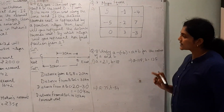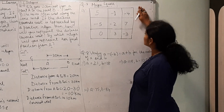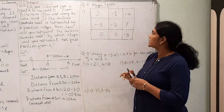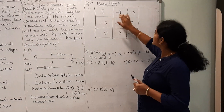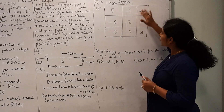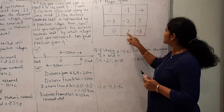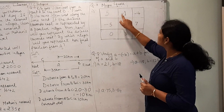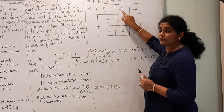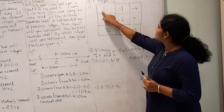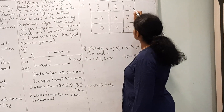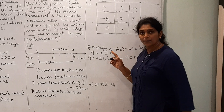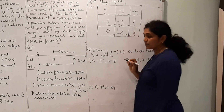Question 7 is a magic square. In this magic square you have to find the sum row-wise, column-wise, and diagonally. If all these sums are equal, then it is a magic square. Let us go horizontally first. The first row sum: 5 plus (-1) plus (-4). Open the bracket: 5 minus 1 minus 4.